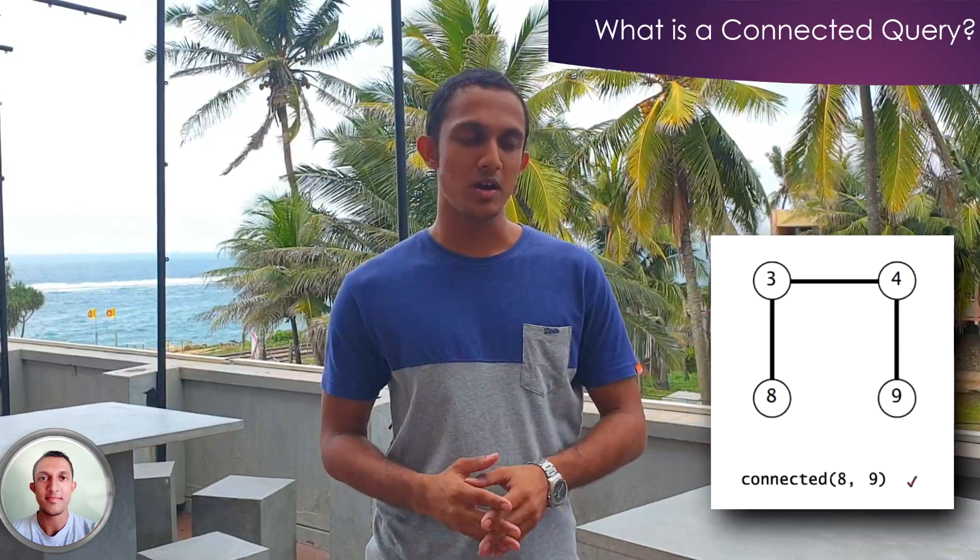What is the Connected Query? Connected Query is to check whether two objects are connected, and the answer is given as a boolean. When we look at this example, we can see whether 8 and 9 are connected — is it true or false? It's true, because 8 and 3 is connected, 3 and 4 is connected, and 4 and 9 is connected. Therefore, 8 and 9 are connected.